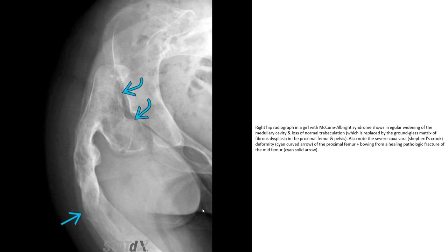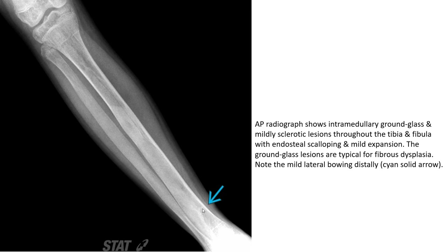This is the right hip radiograph in a patient with McCune-Albright syndrome, showing widening of the medullary cavity and loss of normal trabeculation. Also noted is coxa vara deformity of the proximal femur, plus bowing from a healing pathologic fracture of the mid-femur. AP radiographs show intramedullary ground glass and mild sclerotic lesions throughout the femur and fibula with endosteal scalloping and mild expansion. The ground glass lesions are typical for fibrous dysplasia.